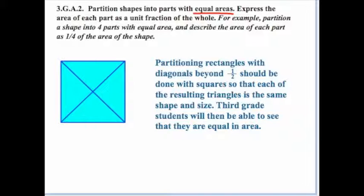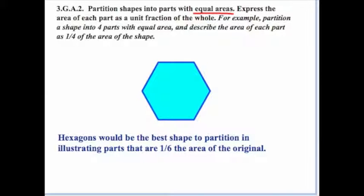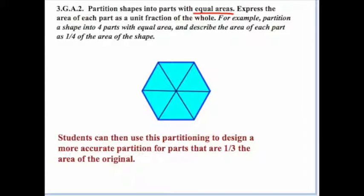Third grade students will then be able to see that the triangles are equal in area. Taking it a step further, you can create eight smaller right triangles that are all equal in area. Hexagons are the best shape for illustrating parts that are one-sixth the area of the original — students just draw diagonals connecting non-consecutive vertices to get six equal areas. Students can then use this partitioning to design a partition for thirds: by removing part of those diagonals, they create three parts that are each one-third the area of the original hexagon.